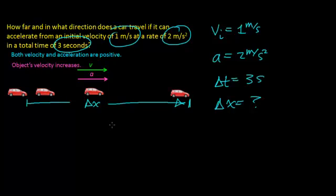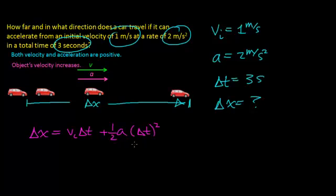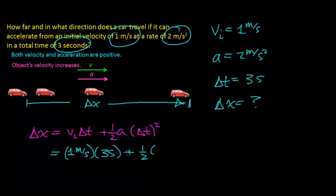Now we apply the one-dimensional kinematic equation: Δx = v₀·t + ½a·t². Plugging in values: Δx = (1 m/s)(3 s) + ½(2 m/s²)(3 s)². Don't forget we have to square the entire time term.